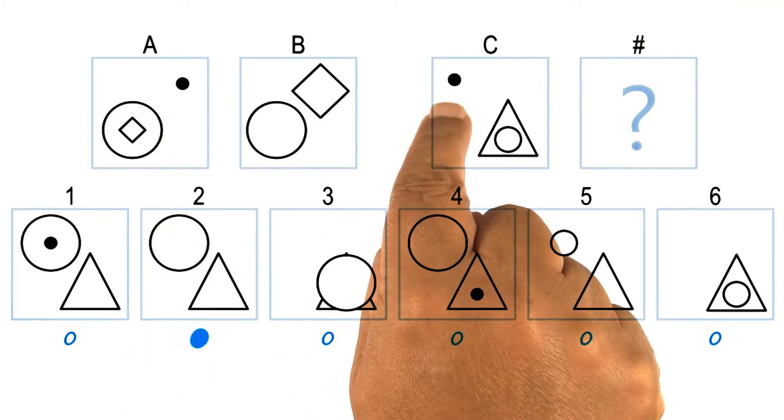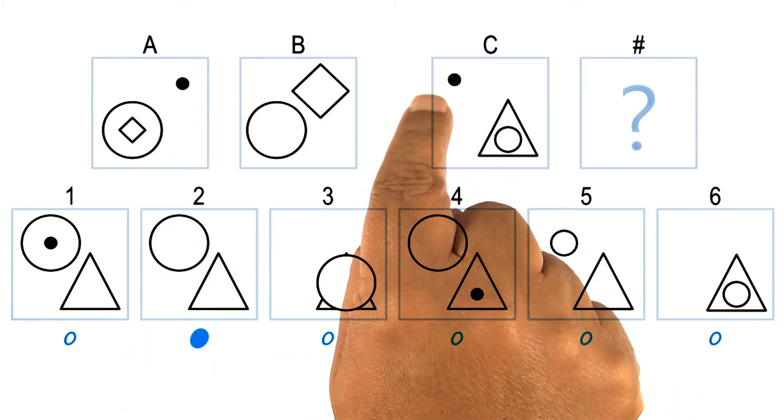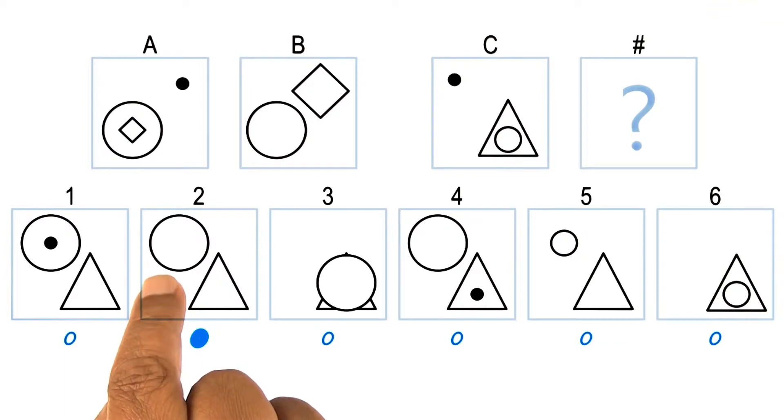And similarly, the circle is replacing the dot here. Since the dot was on the left of the triangle here, it makes sense to put the circle on the left of the triangle.